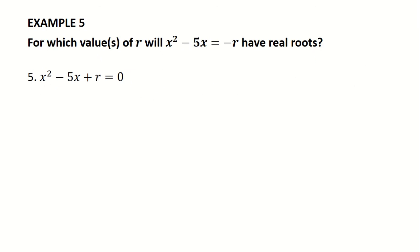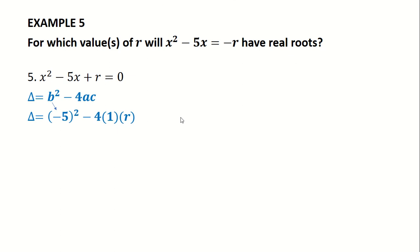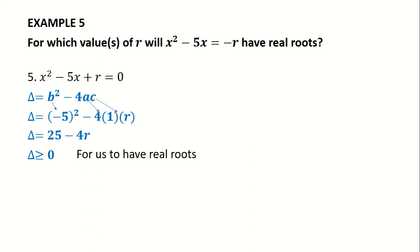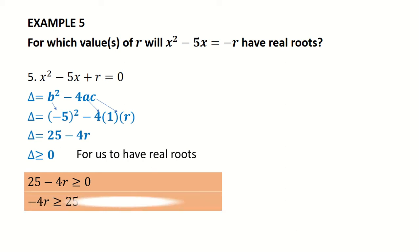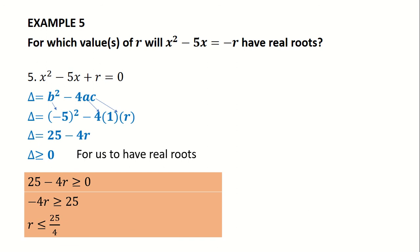For which values of r will x squared minus 5x equals minus r be real? First, find delta. Substituting b as minus 5 and simplifying, we get delta equals 25 minus 4r. For a real solution, delta must be greater than or equal to 0. So we set 25 minus 4r greater than or equal to 0 and solve using inequalities. Therefore, r must be less than or equal to 25 over 4.